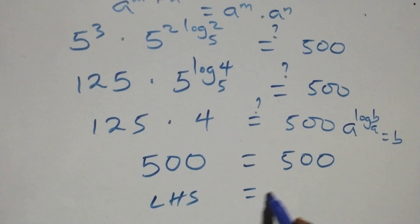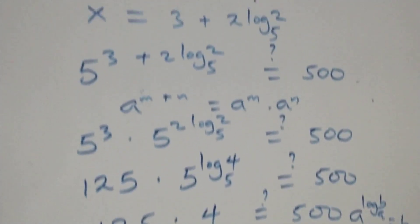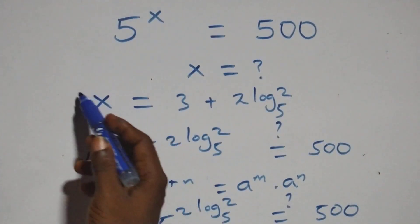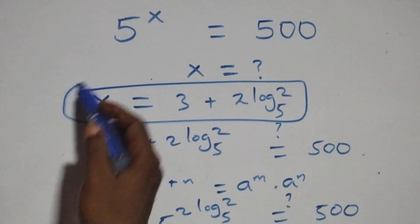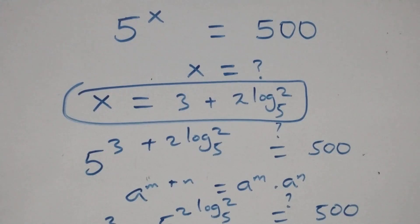The left-hand side is equal to the right-hand side. Therefore, we conclude that x equals to 3 plus 2 log 2 base 5 satisfies the given problem. Thank you for watching. Don't forget to subscribe for more videos and turn the notification bell on. Share this video, give it a thumbs up, and put your comments. See you next class. Bye for now.